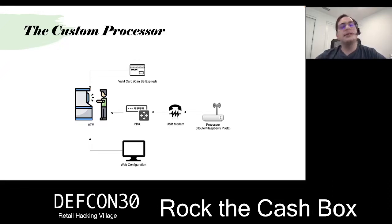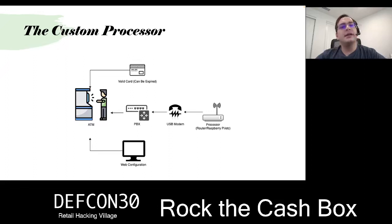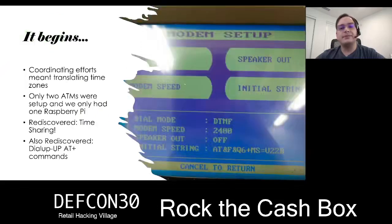The ATM internally checks to make sure it's a valid card type. We were trying to find ATM-valid cards. The only thing we were able to obtain that wasn't an old credit card was Visa prepaid gift cards. Those were accepted and we were able to use them and read the card data.